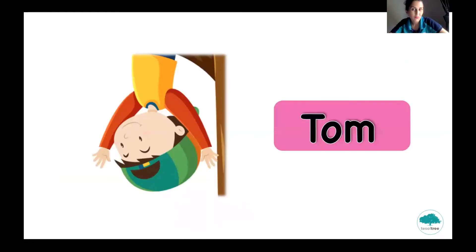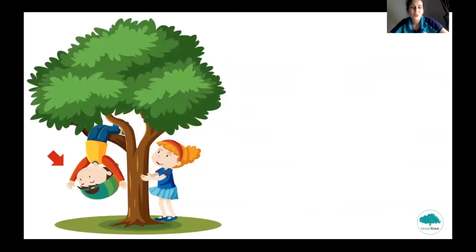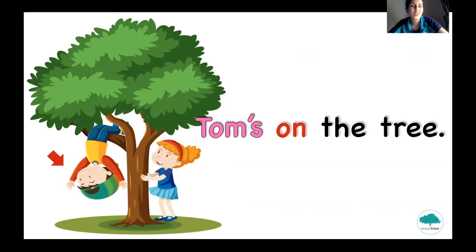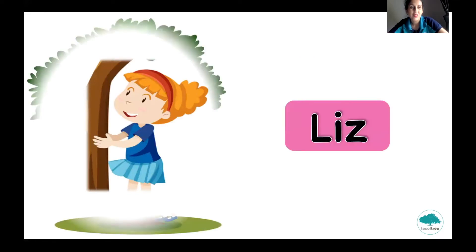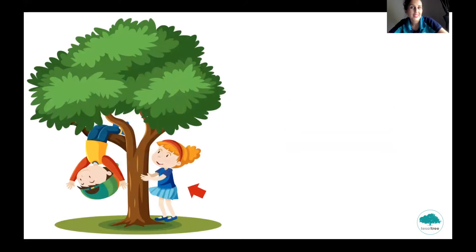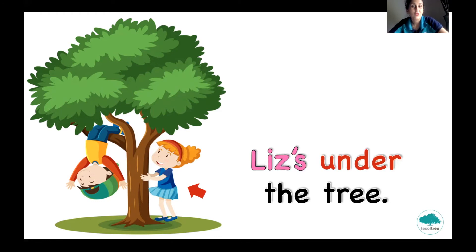P2, this is Tom. I want to introduce you Tom and his friend. And where is Tom? Tom's on the tree. You can see him. He is on the tree. Please repeat the sentence. Good job. And what about his friend? This is Liz. Can you tell me where is Liz? Liz's under the tree. Please read the sentence and repeat. Liz's under the tree. Okay, good job. P2.